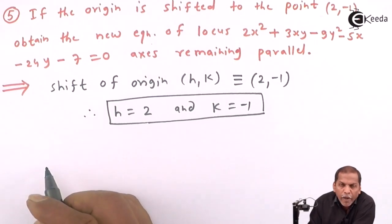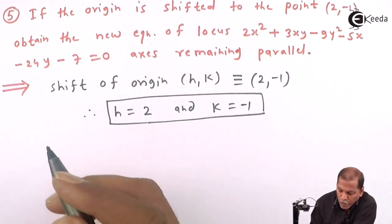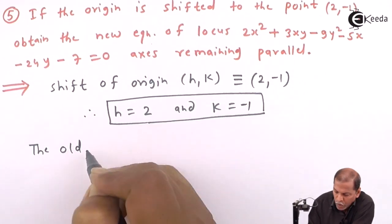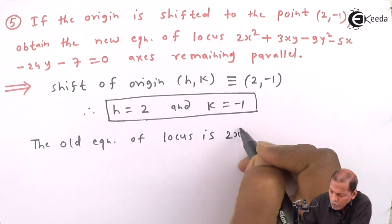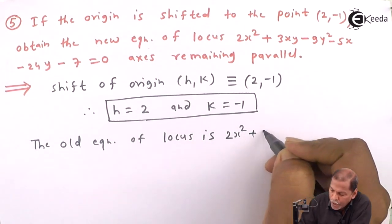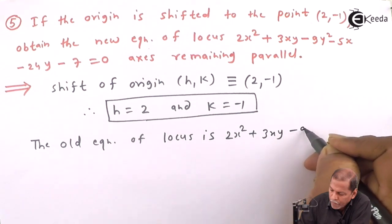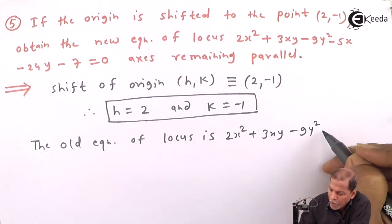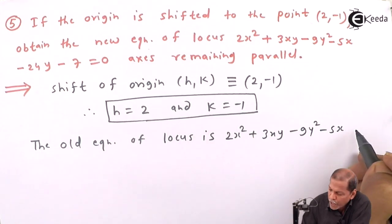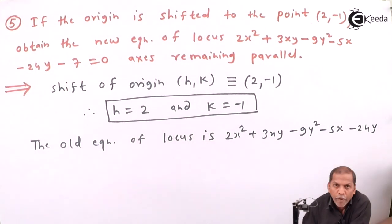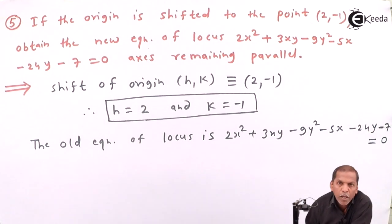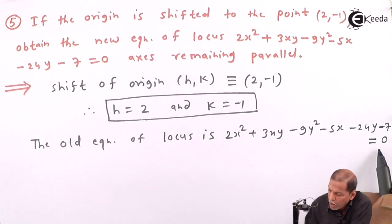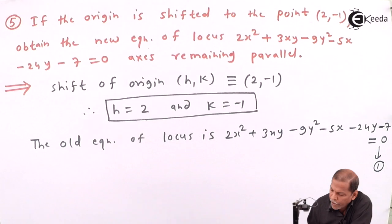The given equation is the old equation of locus: 2x² + 3xy - 9y² - 5x - 24y - 7 = 0. Let us denote this as equation number 1.